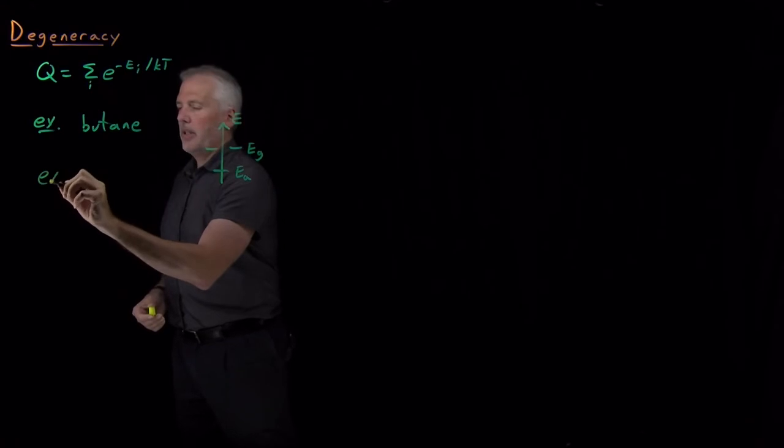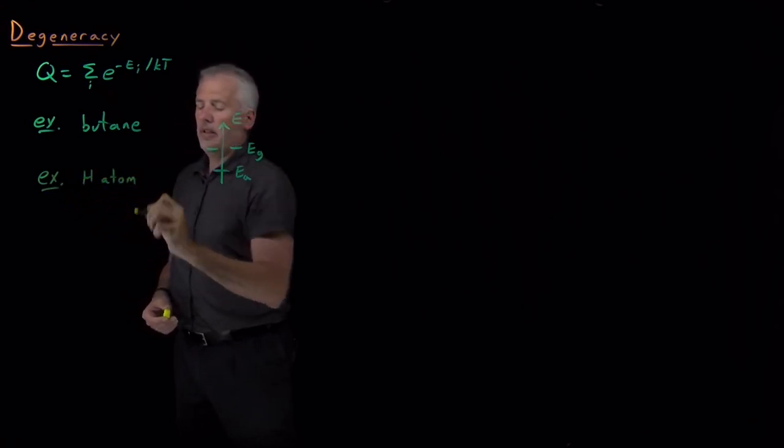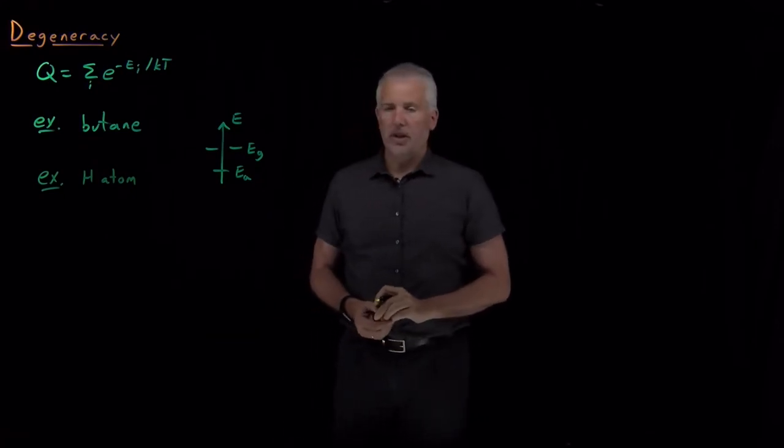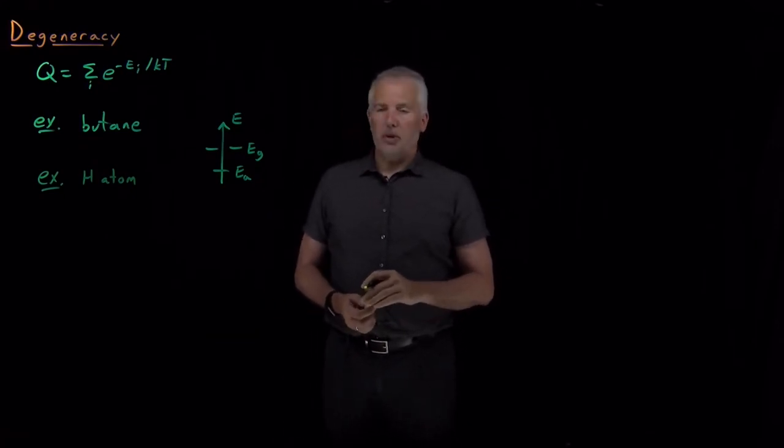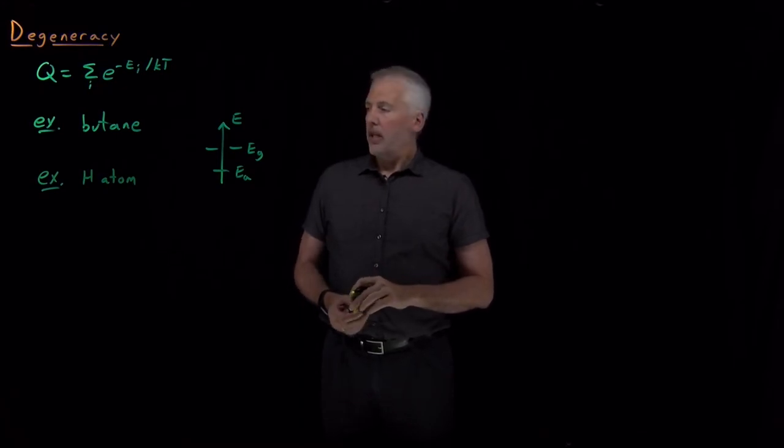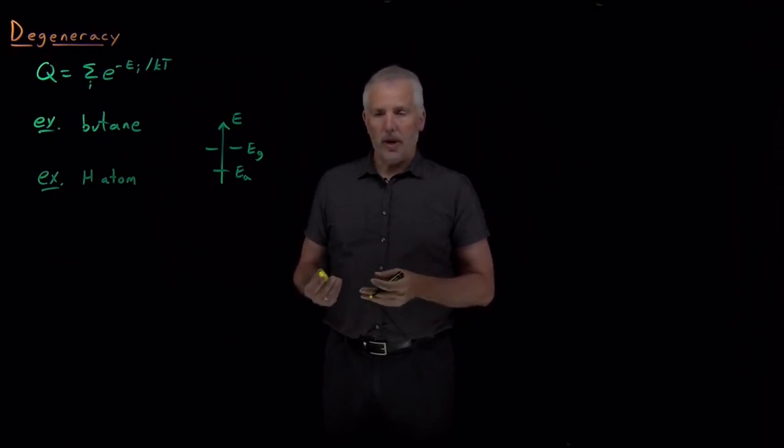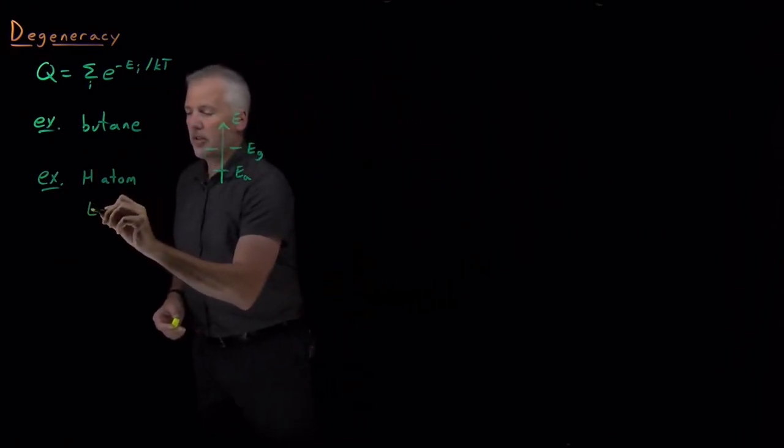Another example would be the hydrogen atom, where I can take electrons in a hydrogen atom and put them in the 1s orbital, the 2s orbital, the 2p orbital, and so on. Under ordinary circumstances, the energy of an electron in the 2px orbital, the 2py orbital, and the 2pz orbital—those energies are all the same.